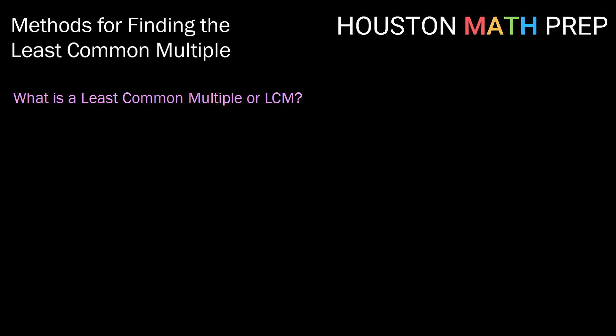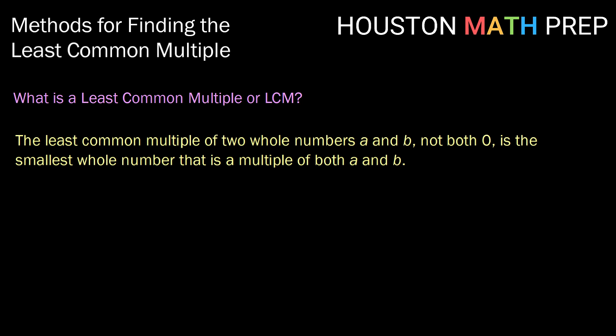Let's start with answering the question, what is a least common multiple? Well, the least common multiple of two whole numbers A and B, both of which are not zero, is the smallest whole number that is a multiple of both A and B.